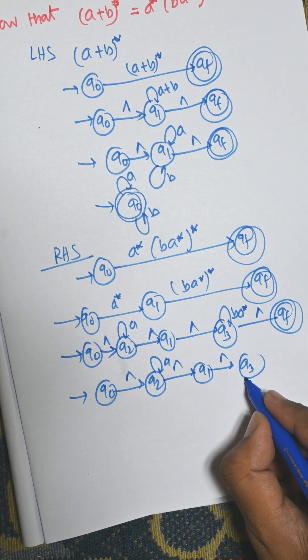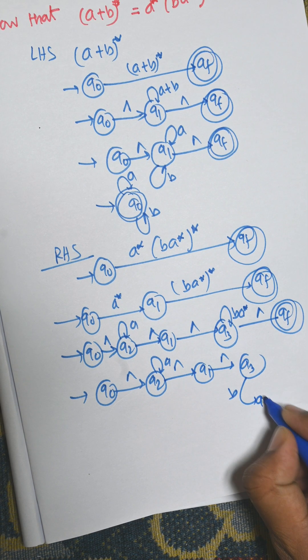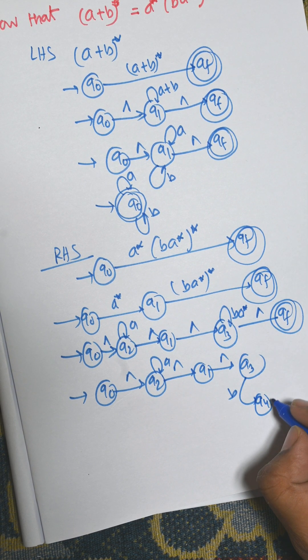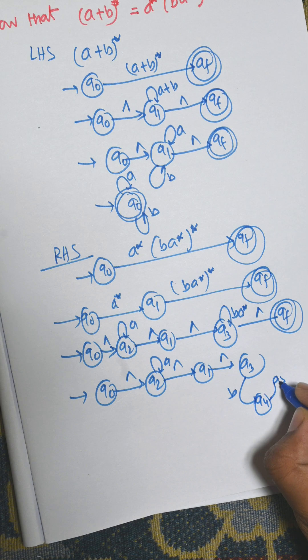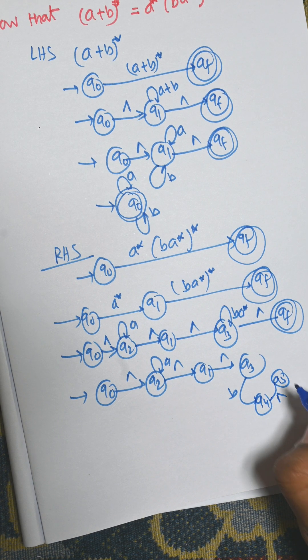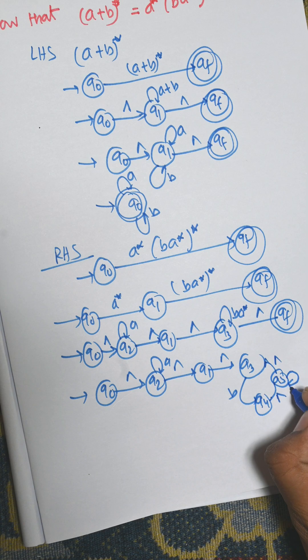For q3 there is a b input goes to q4 and for q4 to a*. That means there is another state q5 and q4 to q5 is empty. q5 to q3 is empty and there is a self loop that is a.